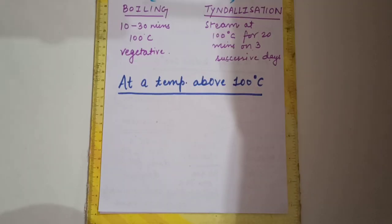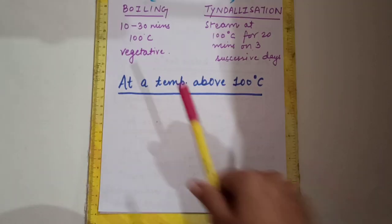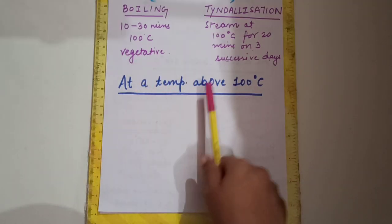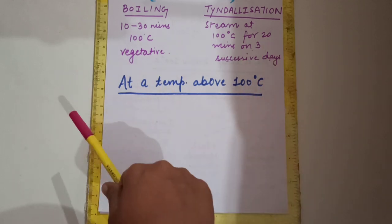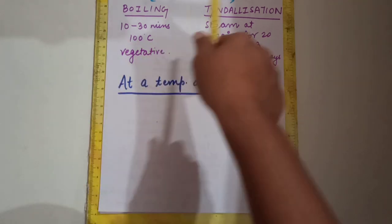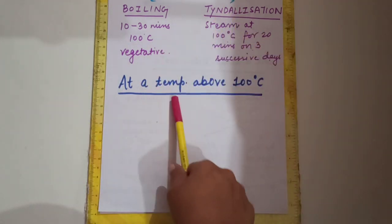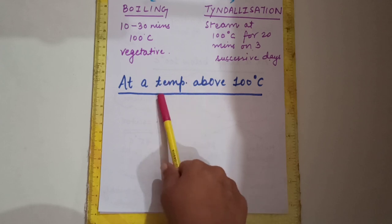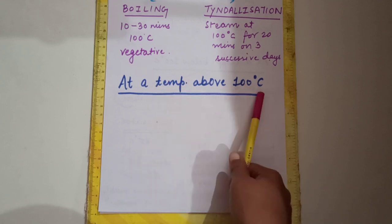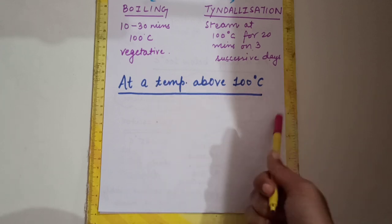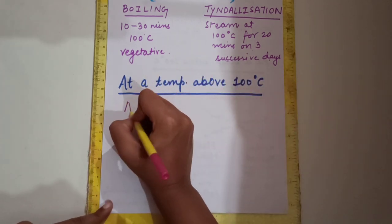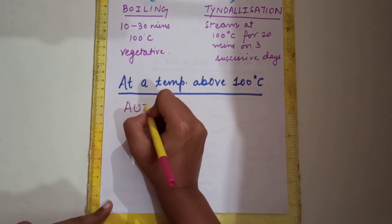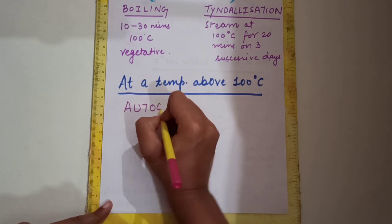Those germinated spores convert into vegetative cells and become active. Now we move to methods at a temperature above 100 degrees Celsius. Here we have one method: the autoclave.